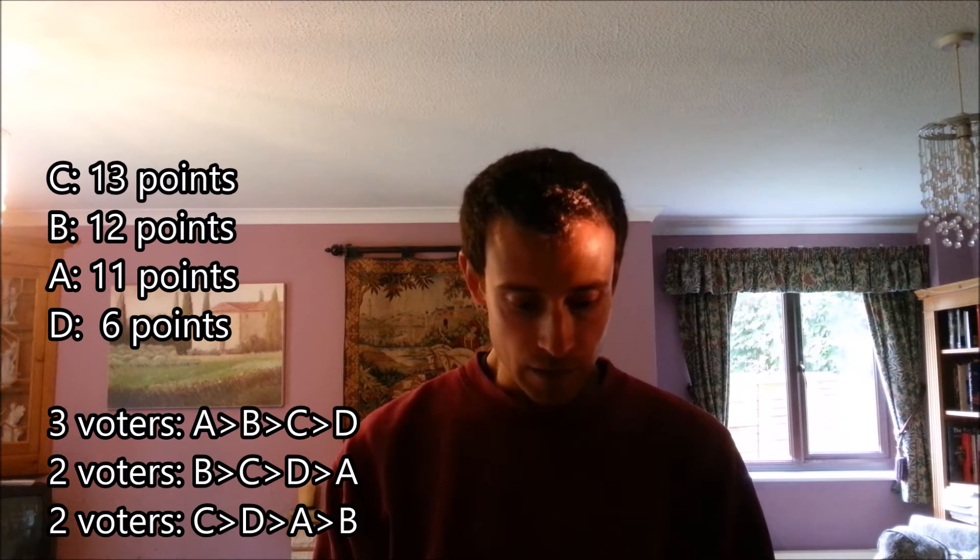Three voters rank Candidate A top, followed by B, C, and then D. Two voters rank Candidate B top, followed by C, D, and then A. And two voters rank Candidate C top, followed by D, A, and B. In this election, Candidate C wins with 13 points. Candidate B has 12 points. Candidate A has 11, and Candidate D is in last place with 6 points.